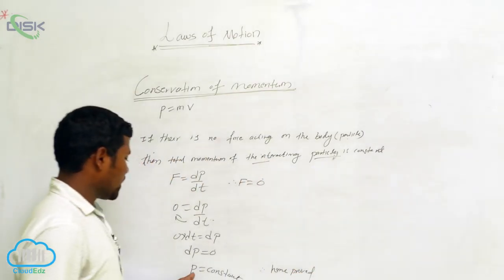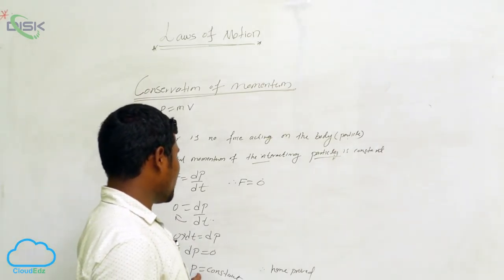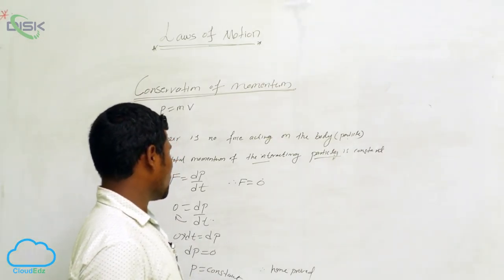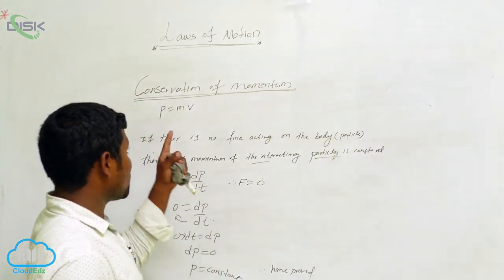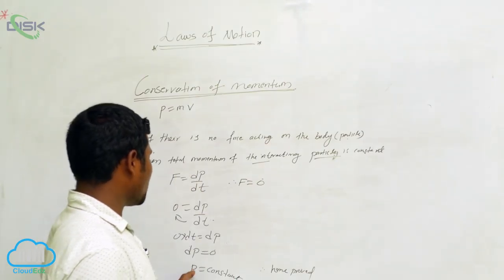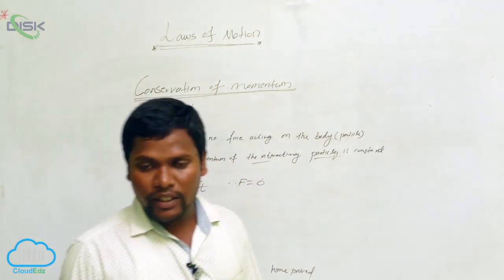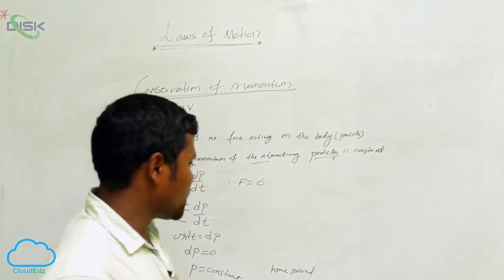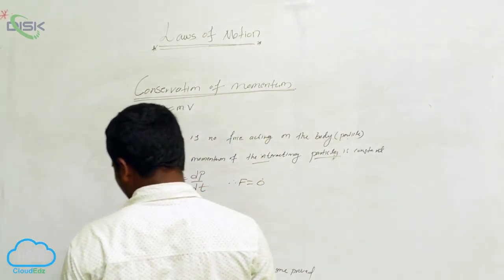Hence proved. Conservation of momentum is established. What we can say is: the conservation of momentum means if you are able to prove p is equal to constant, then it is proved.